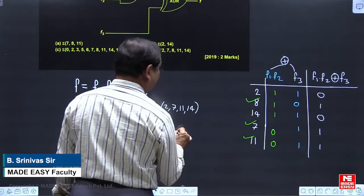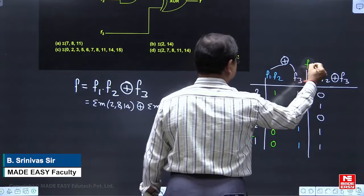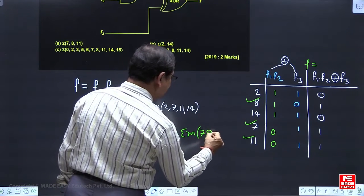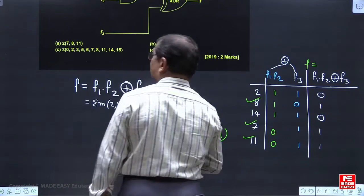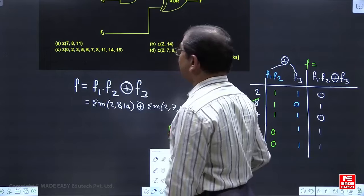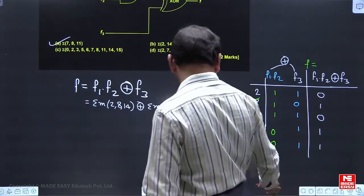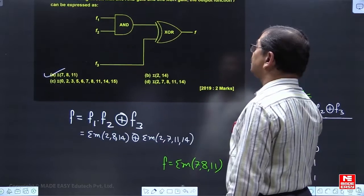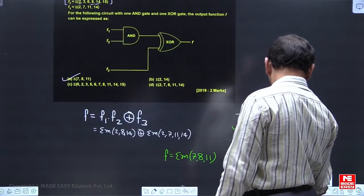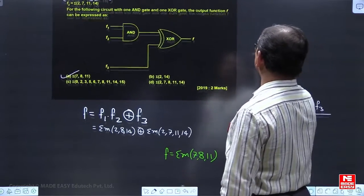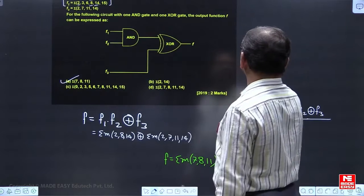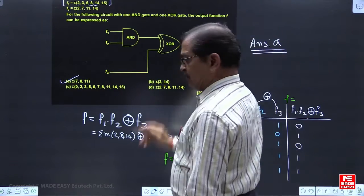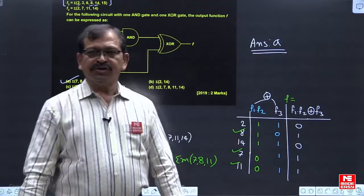So that f function what you are talking, this is f basically. f is having the minterms as 7, 8 and 11. So which is matching answer. If you look for matching answer, option A we are having as a matching answer. Hence, answer to this question. Answer to this question is option A. It is a good question.